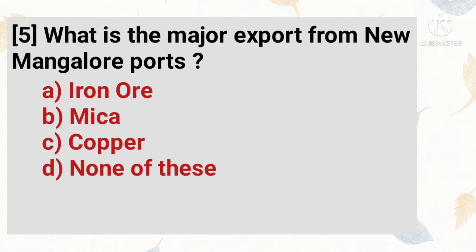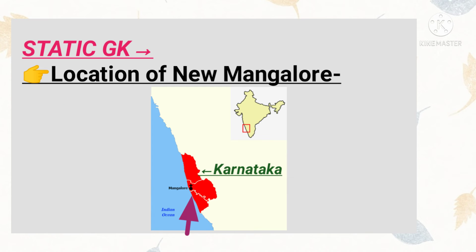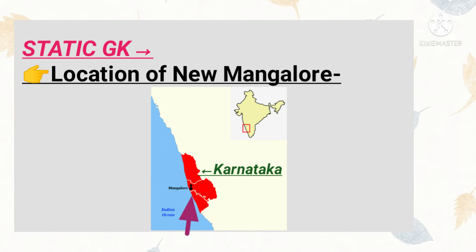What is the major export from New Mangalore port? The right answer is iron ore. Some import products through this port are edible oil, petroleum, and fertilizers. The New Mangalore port is also known as Helbandar. It is a deep water port located at Panambur of Mangalore in Karnataka state.